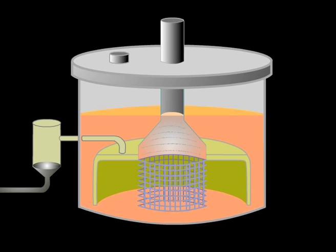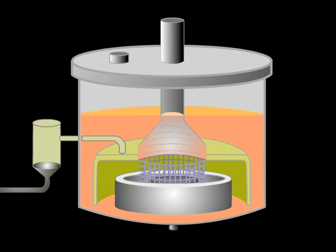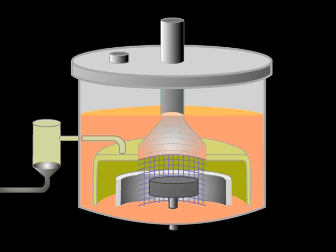The Downs cell has a central carbon anode and a cylindrical iron cathode. Neither electrode takes part in the reaction.